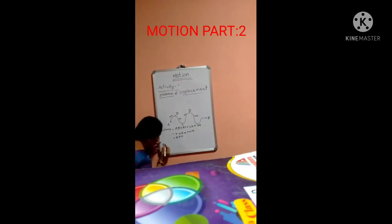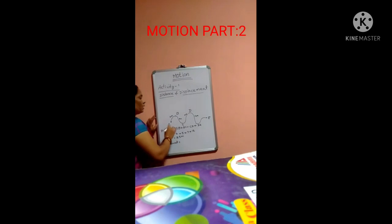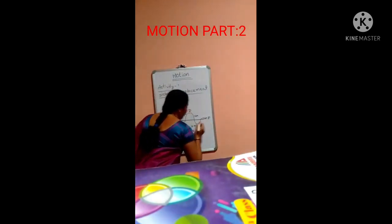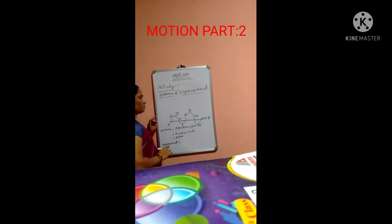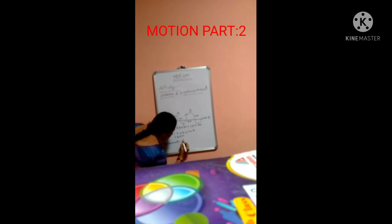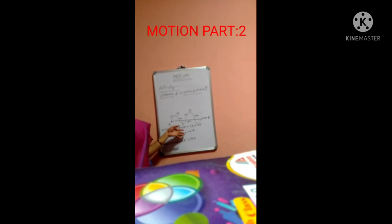Now we calculate the displacement. We know that the definition of displacement is the shortest distance between two points. Here the shortest distance between A and E is a straight line. The distance is equal to 15 meters. So displacement is equal to AE, that is equal to 15 meters. In this way, we calculate the distance and displacement of an object traveled in the given path.